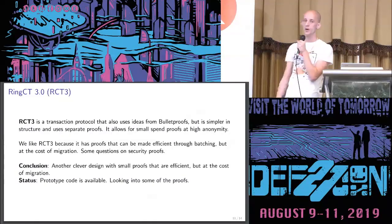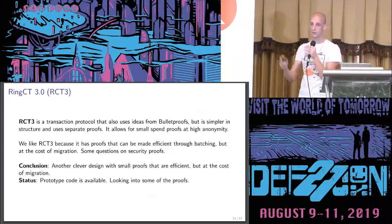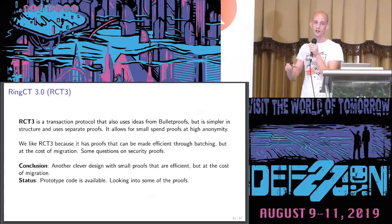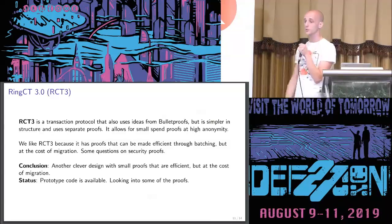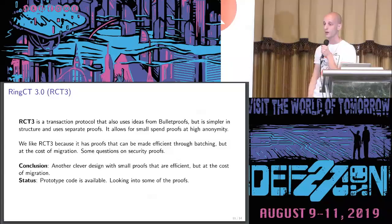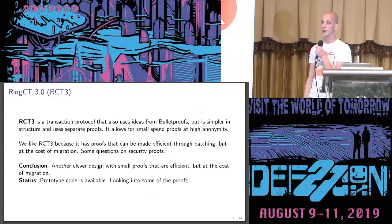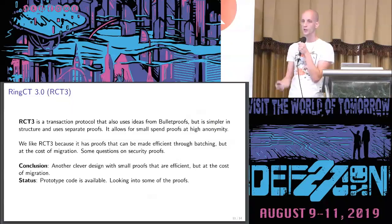The last big one is called RingCT 3.0. It's a transaction protocol that at first blush looks like OmniRing — it also uses ideas from the Bulletproofs scheme from Stanford. But it's simpler in structure and uses separate proofs for spending instead of OmniRing's one compact single proof. Much like OmniRing, it allows for very small spend proofs at fairly high anonymity sets. It can be made efficient through batching, unlike OmniRing right now, but at the cost of some migration and tricky situations. There are also questions remaining on some of the security proofs. There is prototype code available, and we're looking into the proofs with other cryptographers.